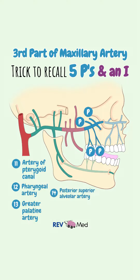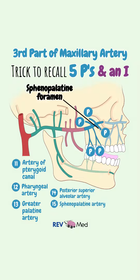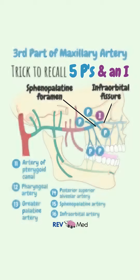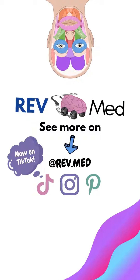Posterior superior alveolar artery, to the maxilla. The sphenopalatine, to the nasal cavity. And finally, I for the infraorbital artery, which enters the inferior orbital fissure.